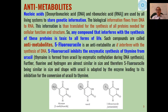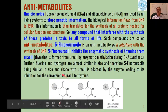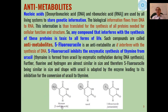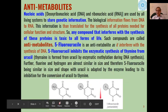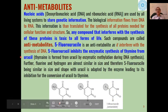If this conversion is inhibited, the functions required to be done by thymine will not be performed — that is why 5-fluorouracil acts as an antimetabolite. The structure shows that only hydrogen has been replaced by fluorine, giving structural similarity to thymine. This is why it inhibits the formation of thymine from uracil.